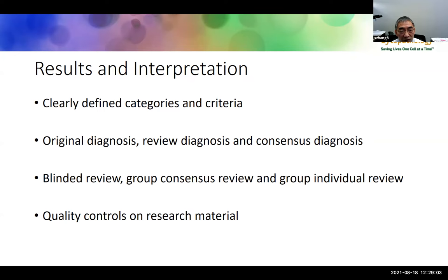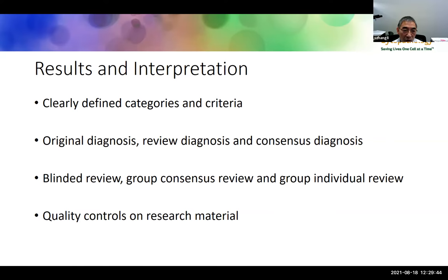For results and interpretation, you have to clearly define the categories and criteria, especially when doing a retrospective study. Cytology diagnoses may be descriptive, even for surgical diagnoses, so you have to clearly define your categories before collecting information. Lay out what is the original diagnosis, what is the review diagnosis, and what is the consensus diagnosis. The original diagnosis could be a definitive diagnosis or a descriptive diagnosis — if descriptive, you must follow your category definitions.